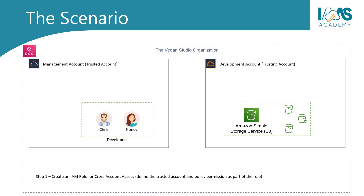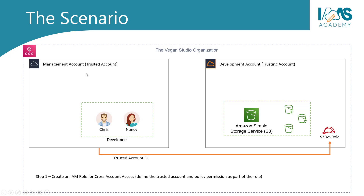Step one is to create an IAM role for cross-account access. This role is created in the trusting account — the account that has services and resources you want to grant access to. When configuring the role for cross-account access, you need to provide the AWS account ID of the account that hosts your identities — in our case, the account ID of the management account. As part of the role configuration, you attach a policy to the role that will grant the necessary permissions to the identities that assume the role. In our case, we will be granting full S3 access to allow Chris and Nancy to create buckets, upload and download objects, and delete buckets.